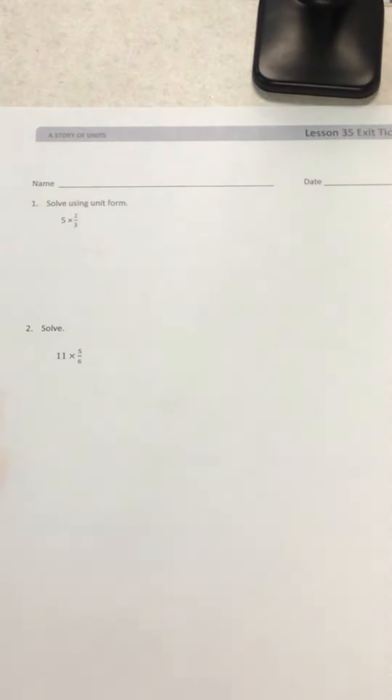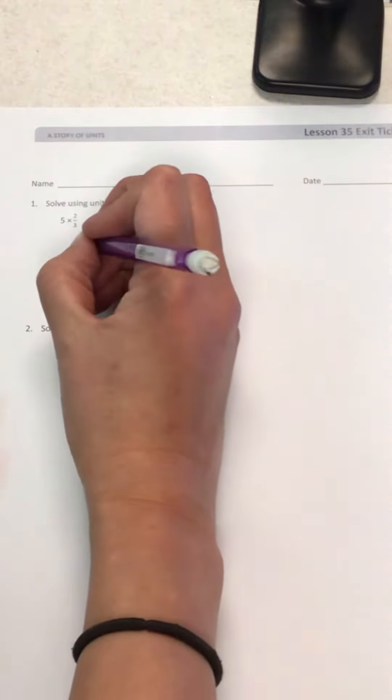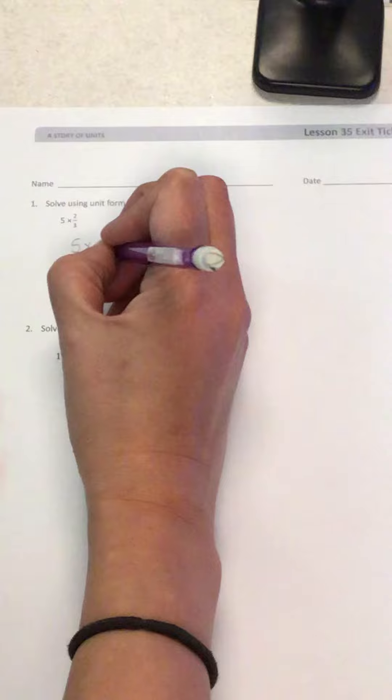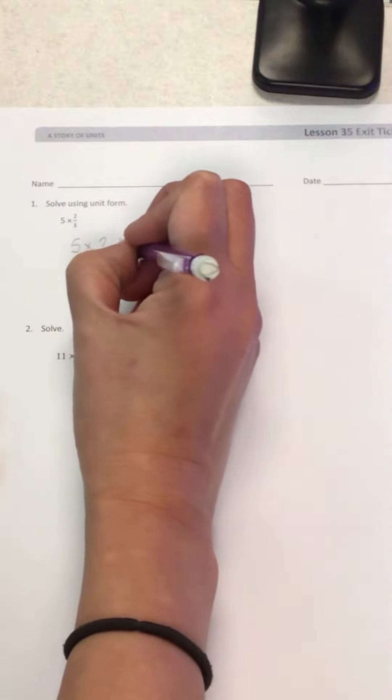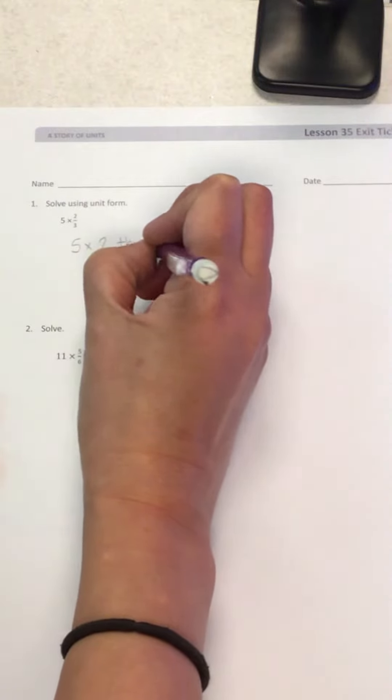And so when I think about units, remember that tells me I'm going to use the word names. And so I'm just going to rewrite this using our word unit form. And I'm going to say 5 times 2 thirds, and that's where that unit comes in as my word.